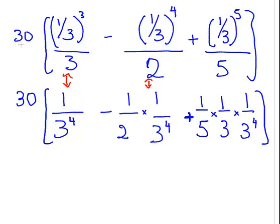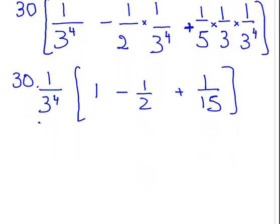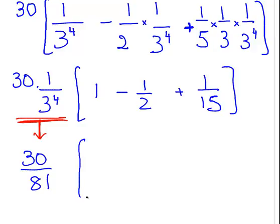I'm just being extremely careful. So what I'm going to do is actually take out the 1 over 3 to the power of 4. And 1 over 3 to the power of 4, [1 - 1/2 + 1/15]. Now we're dealing with something much more manageable. 1 over 3 to the 4 is 1 over 81. So 30 times that is 30 over 81. So just to be clear, all this expression here becomes that. 1 minus 1/2, plus 1 over 15.